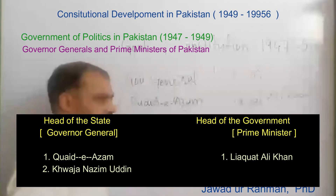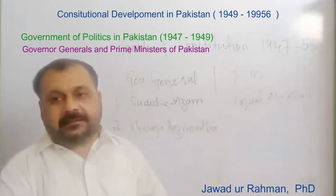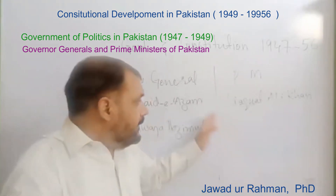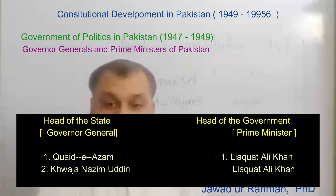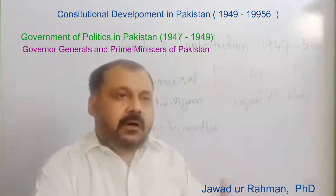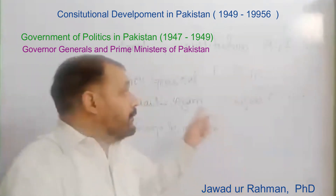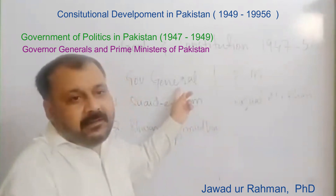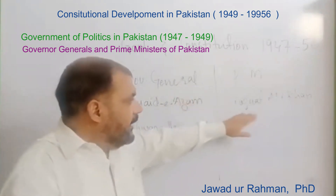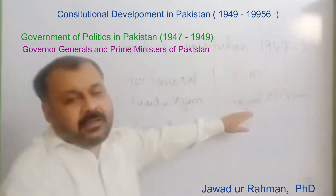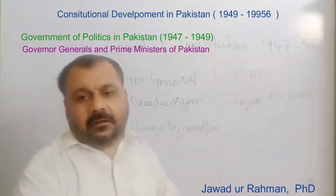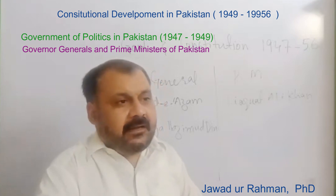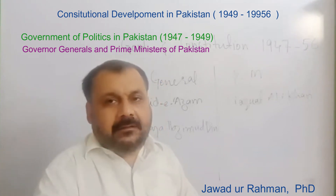Khawaja Nazimuddin was from Bengal — a politician, a landlord, an educated and soft-hearted man. After the death of Jinnah, the machinery of government was overwhelmed by Prime Minister Liaquat Ali Khan. This shows that power gravitates toward the most dominant personality: Jinnah as Governor General held more power, but after him Liaquat Ali Khan as Prime Minister held more power, making the Governor General a more routine head of state. Liaquat Ali Khan was assassinated in Rawalpindi in October 1951.